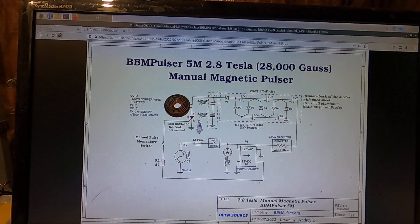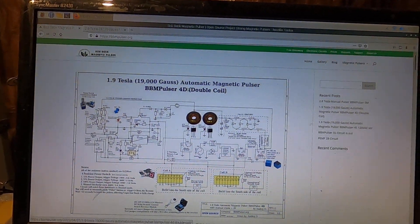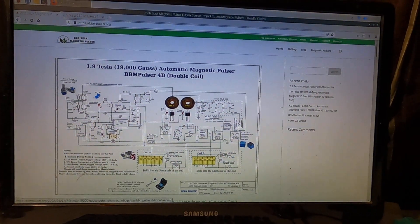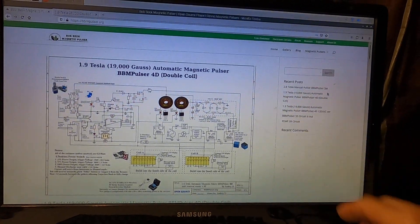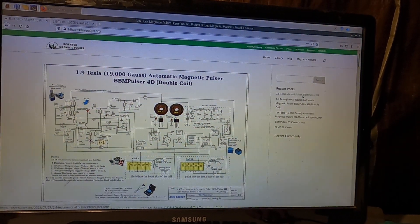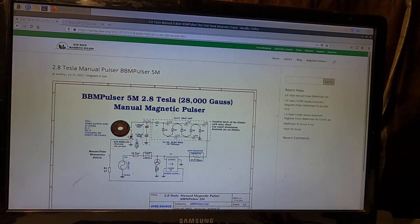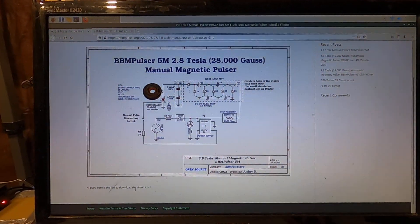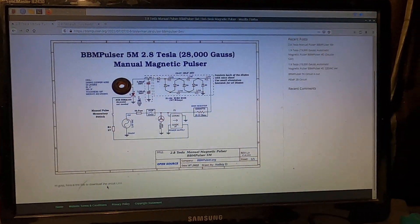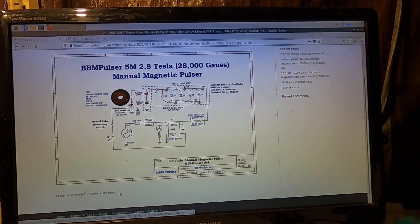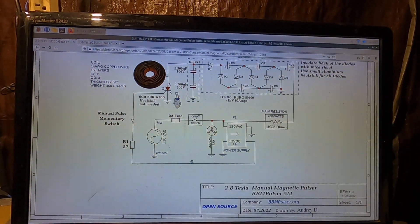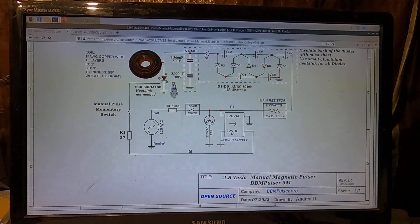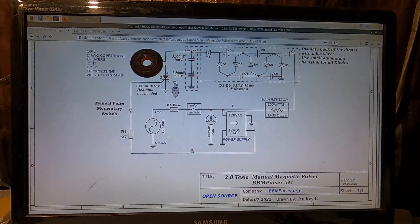And you should load this page here, and then if you go to 2.8 Tesla manual pulsar you should get this circuit here. And then on the bottom here is a link for full size image. This will download the full size image for you.